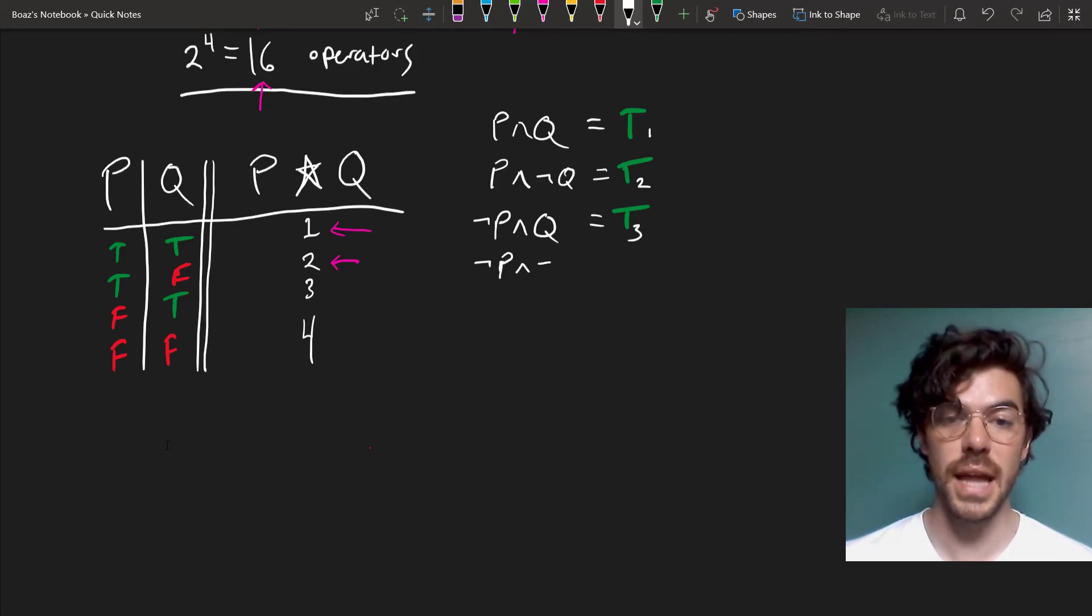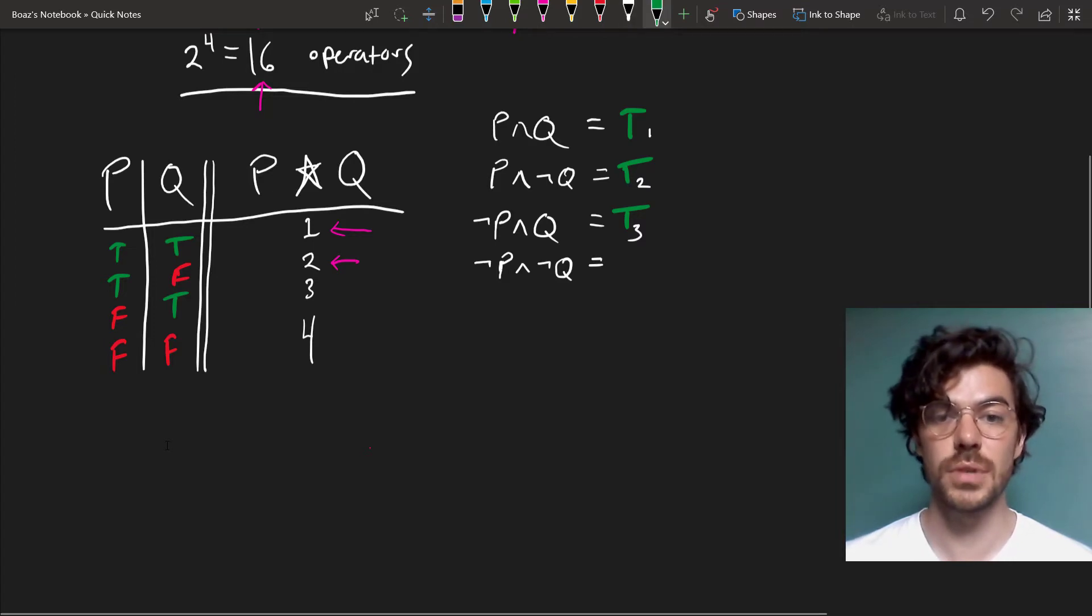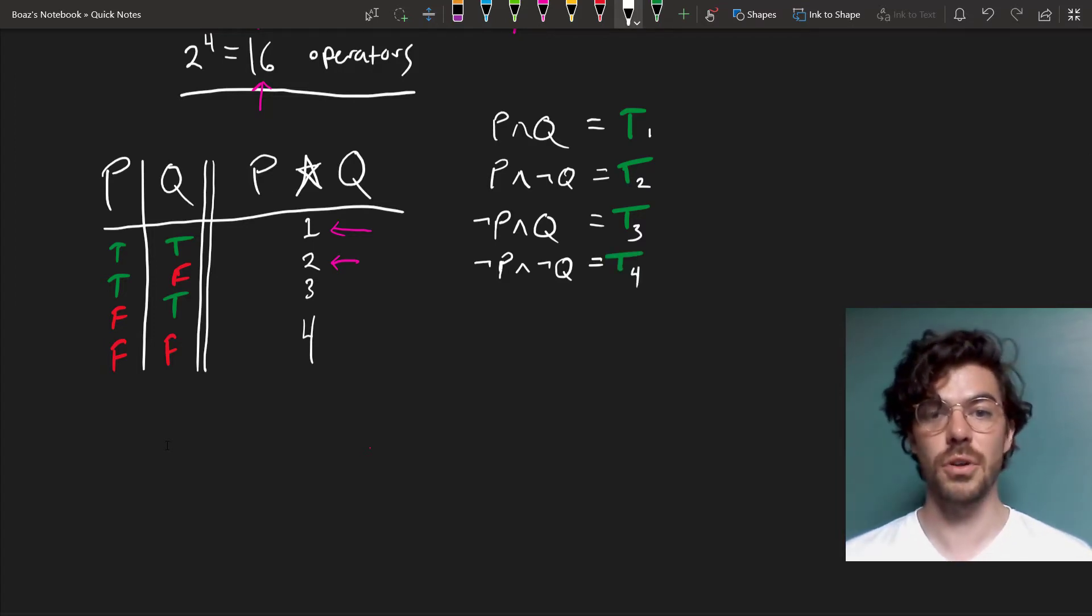Finally, if we want to give one that is true in the last row, we can give NOT P AND NOT Q, which is true in row 4 and false in all the rest.